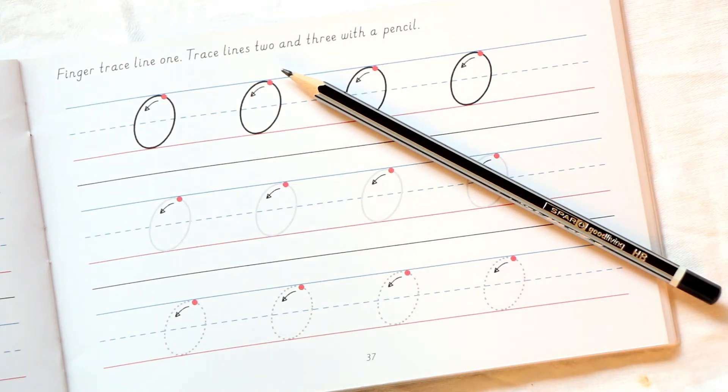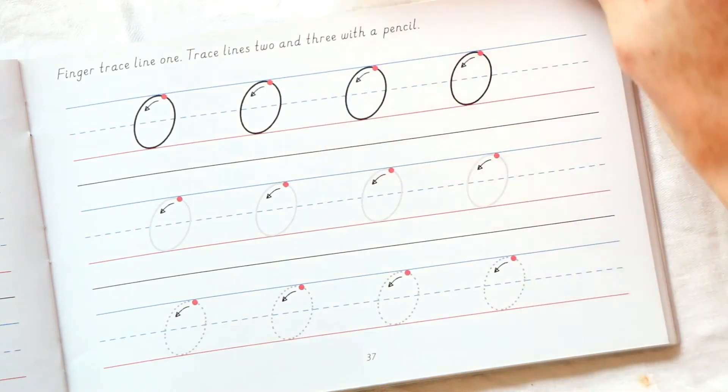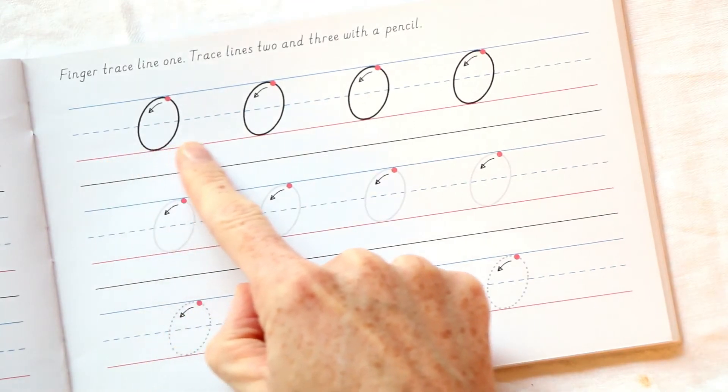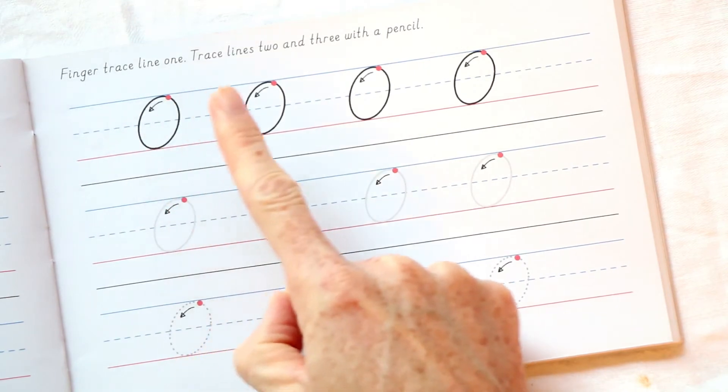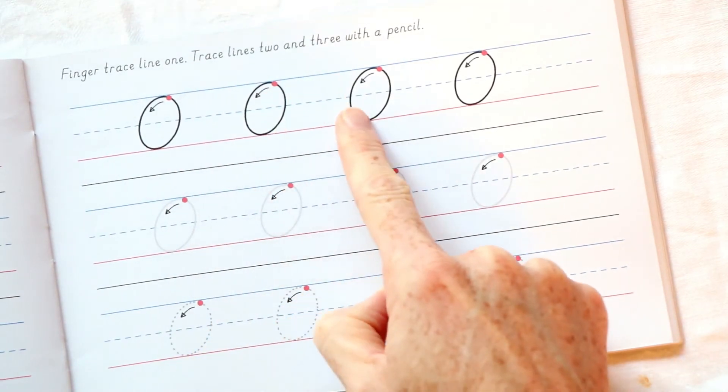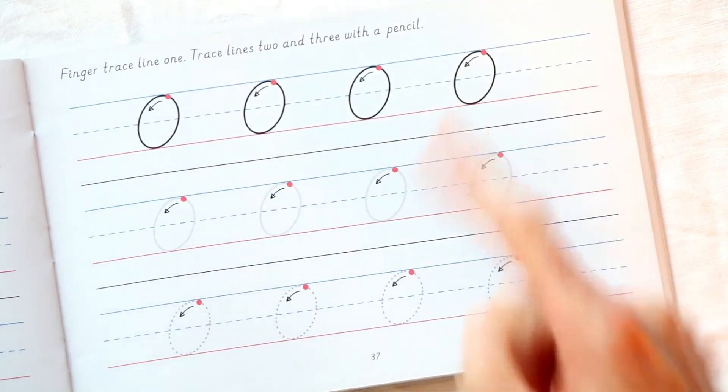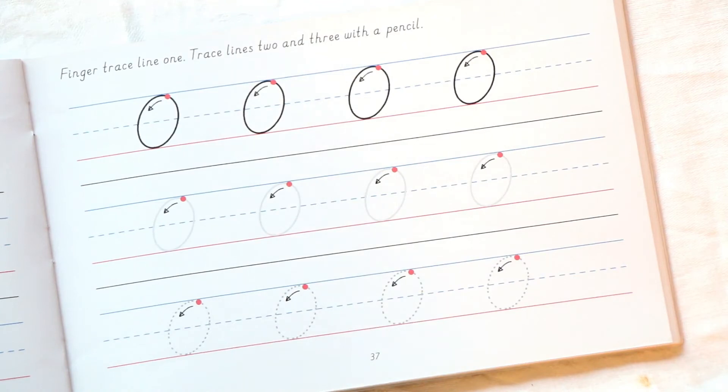Now we are going to go to our work and see our letter. Let's find the top row of O's. Can you see the top row? How many O's are there? One, two, three, four in the top line. Can you remember what we do in the top line? We trace.